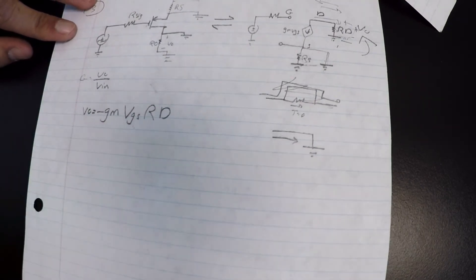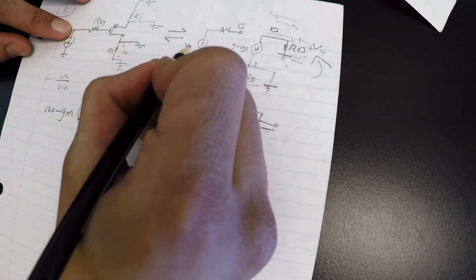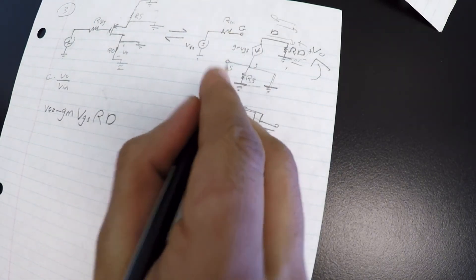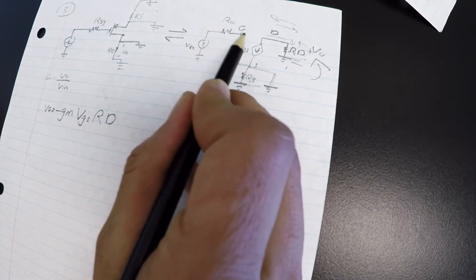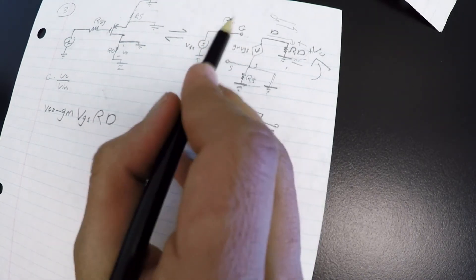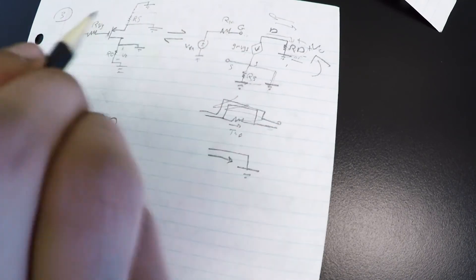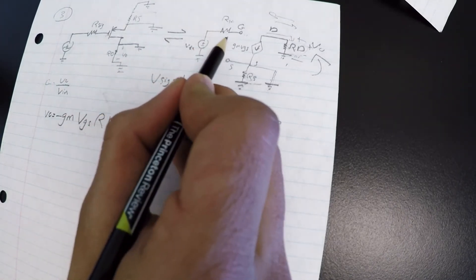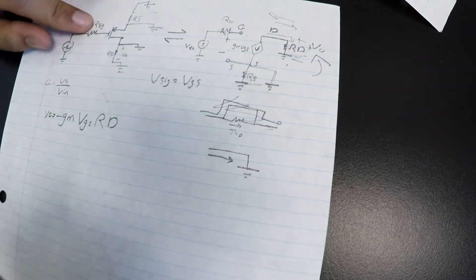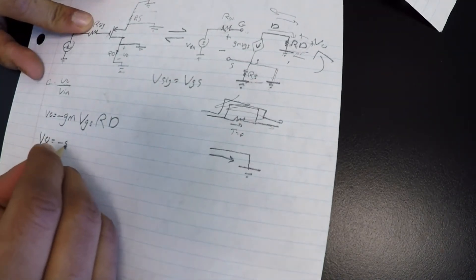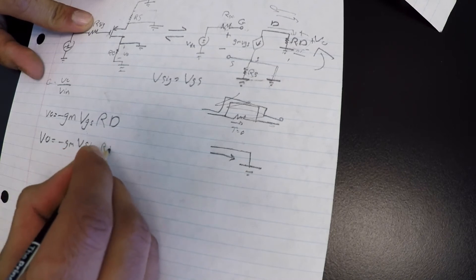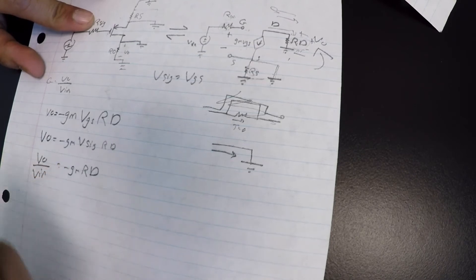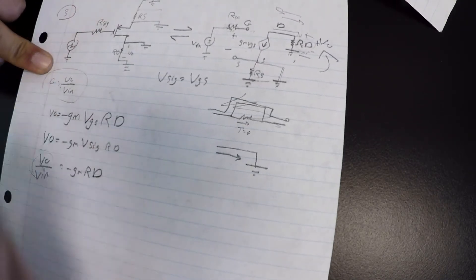The V-signal is at the gate, and since the source is grounded and no current flows through the input path, there is no voltage drop, so V-signal equals VGS. Therefore Vout equals negative GM times V-signal times RD, and Vout over Vin equals negative GM times RD.